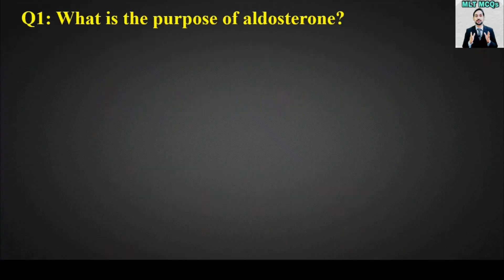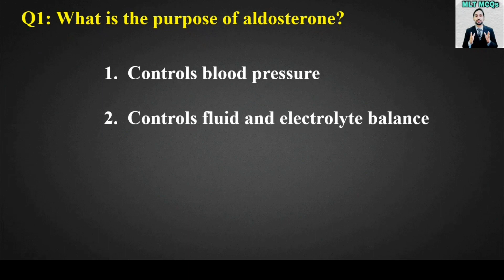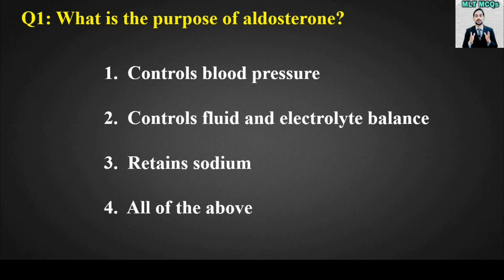MCQ number 1: What is the purpose of aldosterone? Options are: controls blood pressure, controls fluid and electrolyte balance, retains sodium, or all of the above. The right answer is option number 4, all of the above. The purpose of aldosterone is to control blood pressure, control fluid and electrolyte balance, and retain sodium.